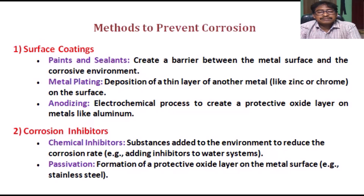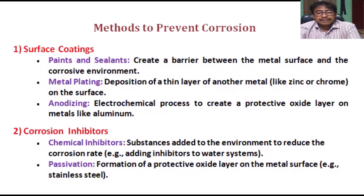Methods to prevent corrosion. 1. Surface coatings: Paints and sealants create a barrier between the metal surface and the corrosive environment. Metal plating involves deposition of a thin layer of another metal, like zinc or chrome, on the surface. Anodizing is an electrochemical process to create a protective oxide layer on metals like aluminum.